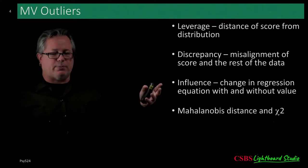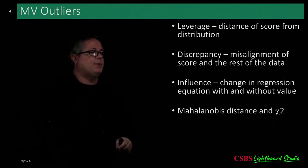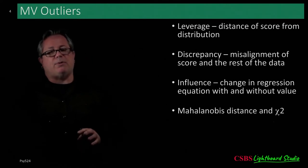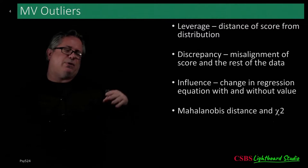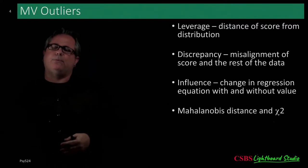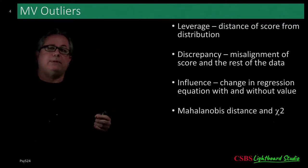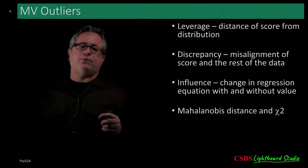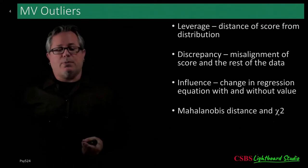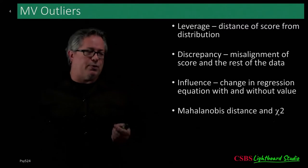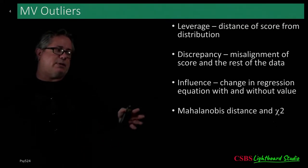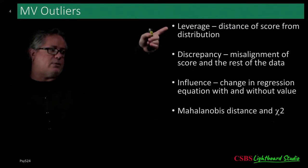Leverage has to do with distance — the farther a point is from the rest of the scores, the more leverage it has. Discrepancy has to do with alignment: if a point lines up along the regression line, it won't have much influence. The problem arises when a point is misaligned — going a different direction from all other points with high leverage — because it will actually change the slope of the model.